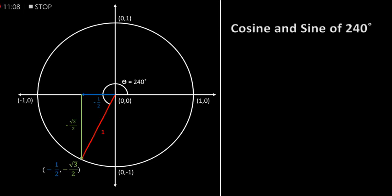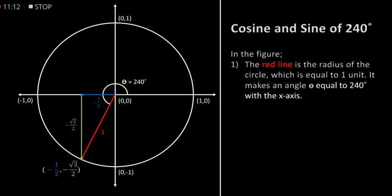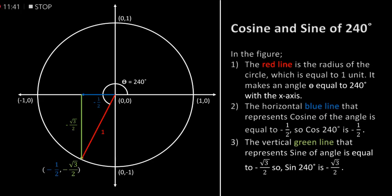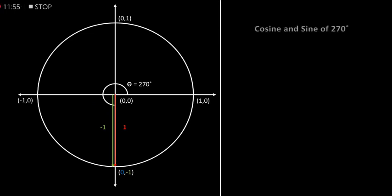Cosine and sine of 240 degrees. In the figure, the red line is the radius of the circle which is equal to 1 unit. It makes an angle theta equal to 240 degrees with the x-axis. The horizontal blue line that represents cosine of the angle is equal to minus 1 by 2, so cos of 240 degrees is equal to minus 1 by 2. The vertical green line that represents sine of the angle is equal to minus square root of 3 by 2, so sin of 240 degrees is equal to minus square root of 3 by 2.